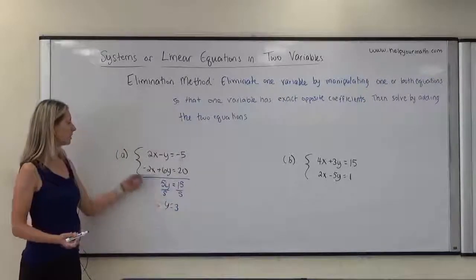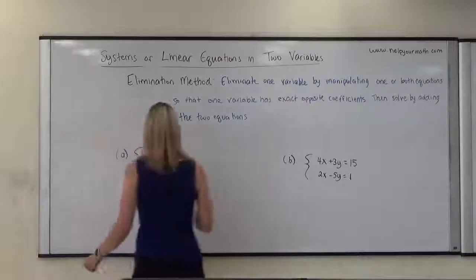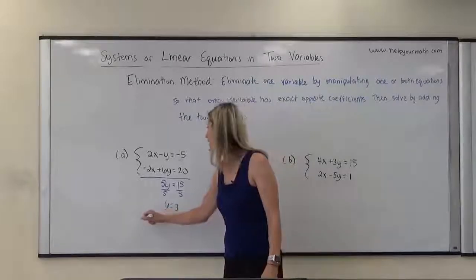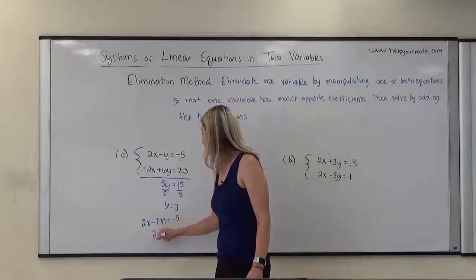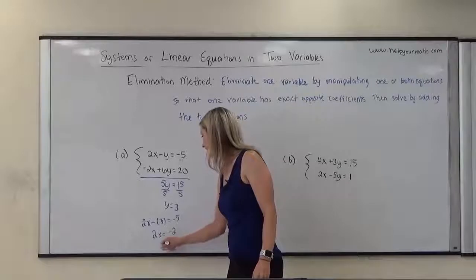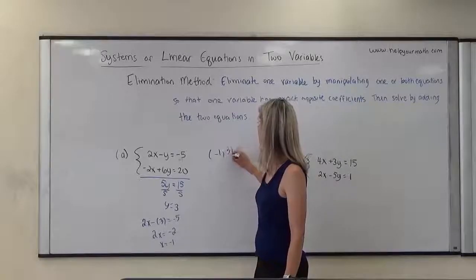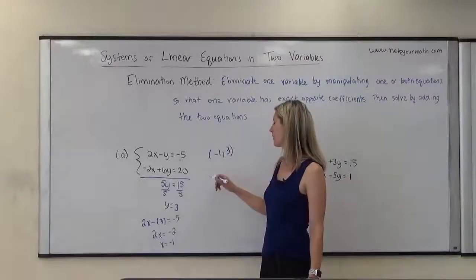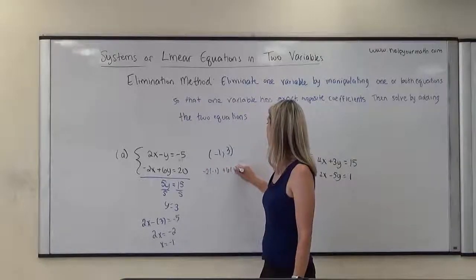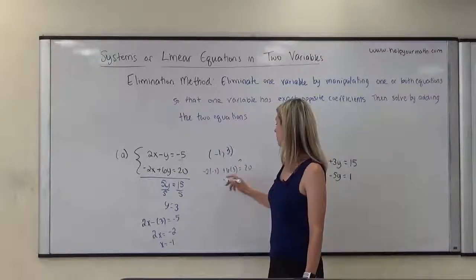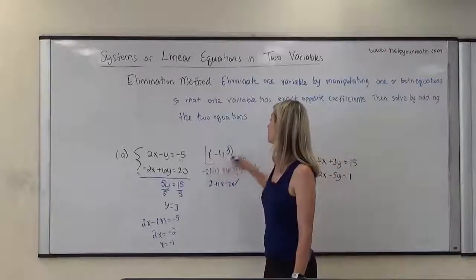Now that we know y is 3, we go back to one of the top two equations — the top one looks friendlier. We're going to substitute in 3 for y, so it would be 2x minus 3 equals negative 5. That would be 2x equals negative 2, and x equals negative 1. So the solution to this system is negative 1 comma 3. I'm going to verify with that second equation — if I plug in negative 1 and 3, I get 2 plus 18, which equals 20. So I feel pretty confident that negative 1, 3 is the solution.